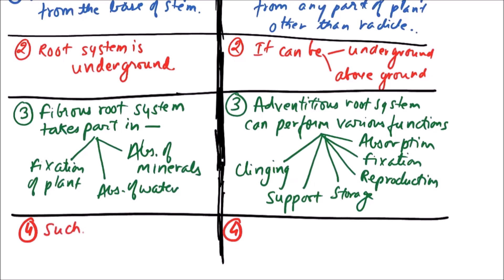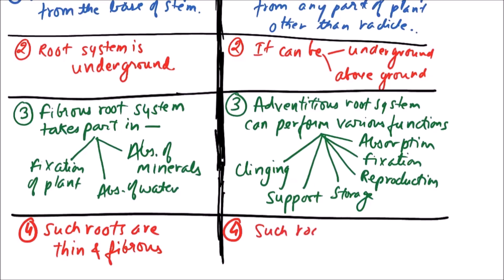Such fibrous roots are thin and fibrous, but adventitious roots may be of varied types — that is, such roots may be thin, thick, or variously modified.